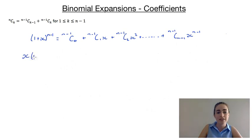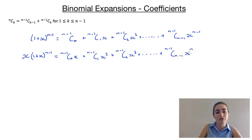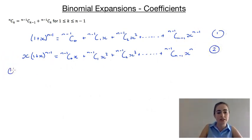I'm going to have x outside of 1 plus x to the power of n minus 1. So that's going to give me (n minus 1)c0 times x, plus (n minus 1)c1 times x squared, plus (n minus 1)c2 times x cubed. And this final term is going to be (n minus 1)c(n minus 1) times x to the power of n. Now I'm going to call this equation 1 and this equation 2, and I'm going to add those two equations together.